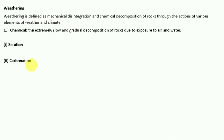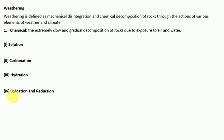The third chemical process is hydration — the chemical addition of water. Calcium sulfate takes water and turns into gypsum, which is more unstable than calcium sulfate. The fourth is oxidation and reduction. Oxidation refers to the combination of a mineral with oxygen to form oxide or hydroxide — for example, red iron turns brown or yellow due to oxidation.